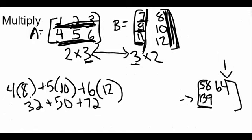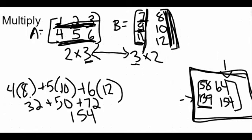And when we add that together, we get 32 plus 50, which is 82, plus 72 gets us 154. So we can fill in that 154 there, and we finally have our 2 by 2 solution matrix here, 58, 64, and then 139, 154.